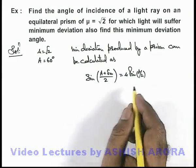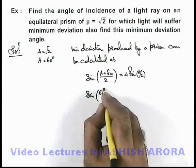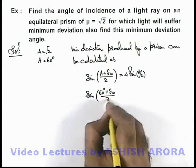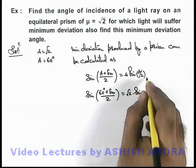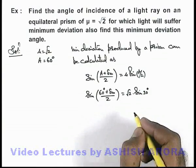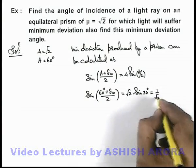If we substitute the values here, sine of A is 60 degrees plus delta m by 2, we can write it to be equal to root 2 times sine of A by 2 is 30 degrees. And sine 30 degrees is 1 by 2, so the resulting value is 1 by root 2.